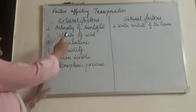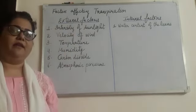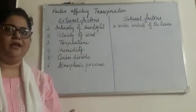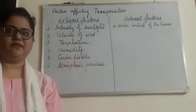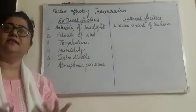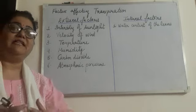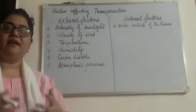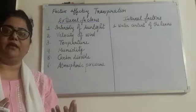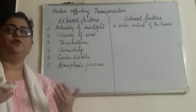Let us discuss about the very first factor: intensity of sunlight. This factor affects transpiration but in an indirect way — it has an influence on transpiration but not in a direct way. Whenever there is sunlight, the process of photosynthesis starts. With the starting of photosynthesis, the guard cells open up because they absorb water and become turgid. When they become turgid, they open up — the stomata pore opens — and gaseous exchange starts, resulting in the process of transpiration.